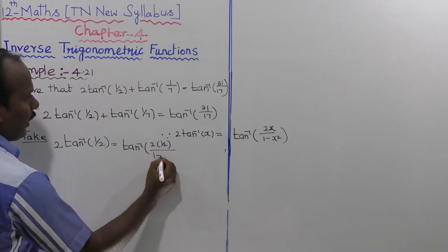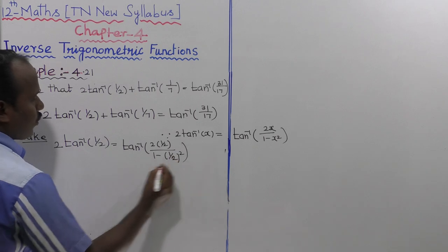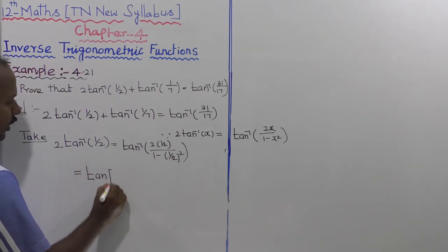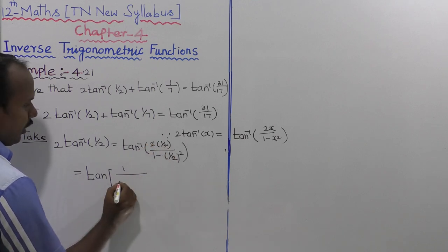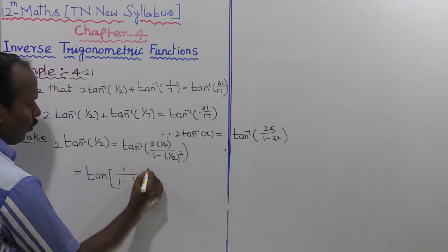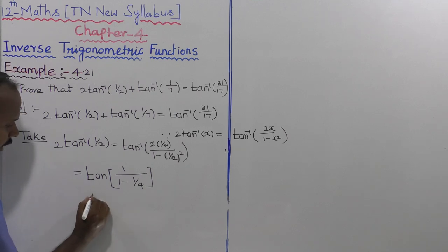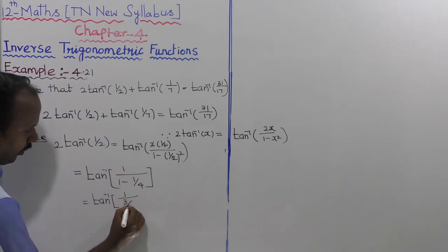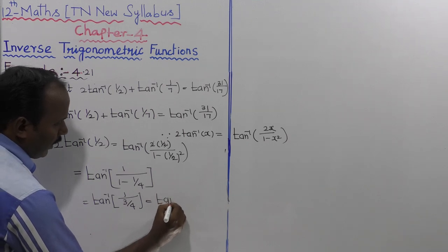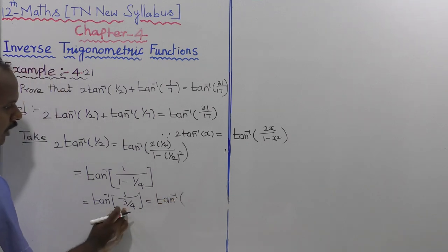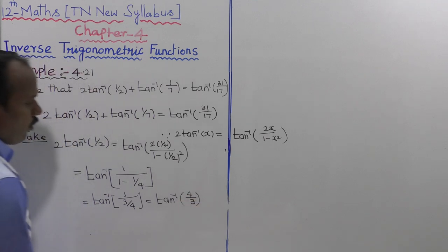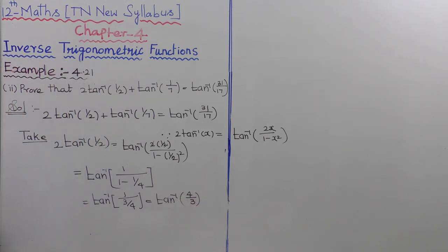So that is equal to tan⁻¹ of 1 divided by (1 − 1/4), which is tan⁻¹ of 1 divided by (3/4). Simplifying, that gives tan⁻¹(4/3).